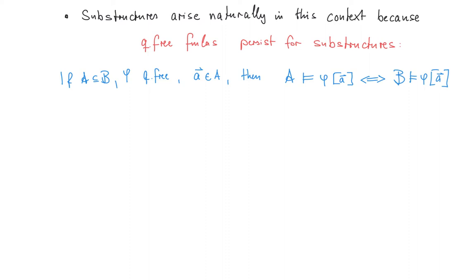You may wonder where that condition about the substructures comes from. In this context they actually arise quite naturally because for quantifier-free formulas we have the following persistence property for substructures: if A is a substructure of B, phi is quantifier-free, and a is a tuple from A, then phi evaluated on a holds in A if and only if it holds in B. So quantifier-free formulas persist for substructures. It might be helpful to compare this to the notion of elementary substructure, where we would have to have this condition for all formulas phi, not just the quantifier-free ones. Since we're particularly interested in quantifier-free formulas, it makes sense that substructures appear here instead of the stronger notion of elementary substructures.